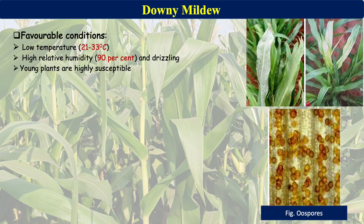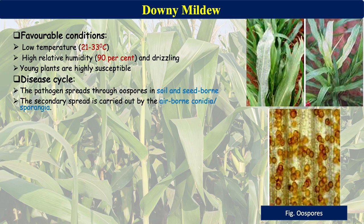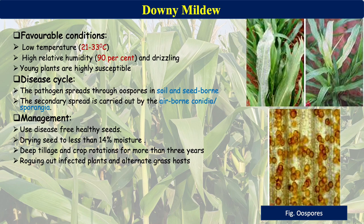For downy mildew, the causative organisms prefer low temperature of 21 to 33 degrees centigrade, high relative humidity near 90%, and light drizzling for germination and infection. Young tender plants are highly susceptible. The pathogen spreads through oospores that survive in the soil and are seed-borne. Secondary spread is carried out by airborne conidia or sporangia.